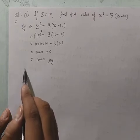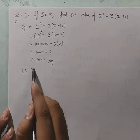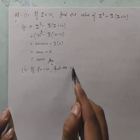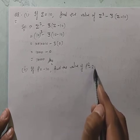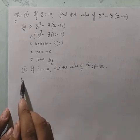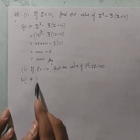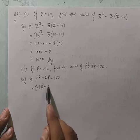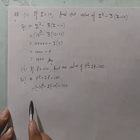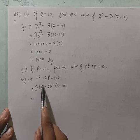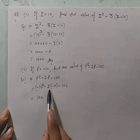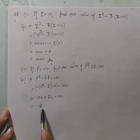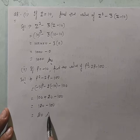Question 8 का second part: if p = minus 10, find the value of p² minus 2p minus 100. Solution: (minus 10)² minus 2×(minus 10) minus 100 = 100 plus 20 minus 100 = 20.